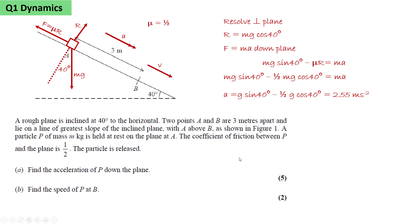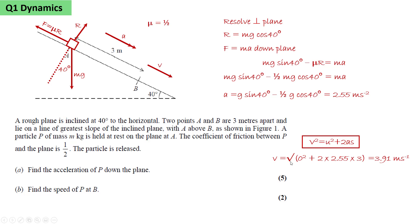We let the speed be V and apply V squared equals U squared plus 2AS. The final velocity will be the square root of 0 squared — the initial velocity squared — plus 2 times the acceleration, which we calculated to be 2.55, times the distance travelled, which we're told is 3. That works out to be 3.91 metres per second.